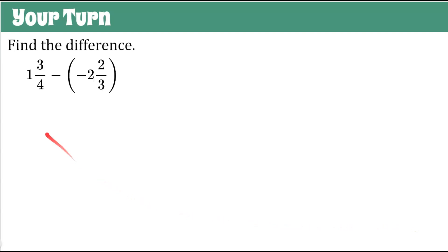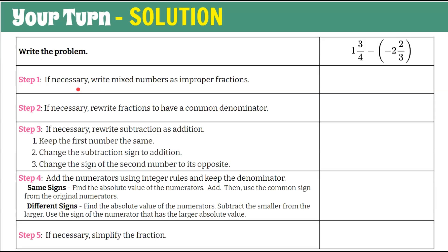It's your turn. Find the difference: 1 and 3 fourths subtract negative 2 and 2 thirds. Pause the video, do all five steps, then come back to see my work. Welcome back. Step 1: write mixed numbers as improper fractions — this is necessary. 4 times 1 plus 3 is 7 fourths. And then 3 times 2 is 6 plus 2 is 8, so we have negative 8 thirds.